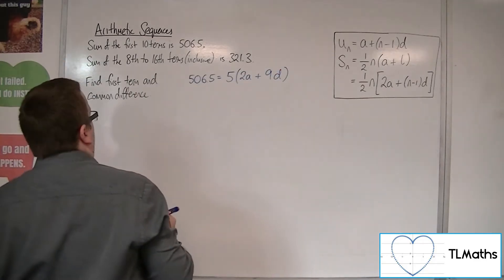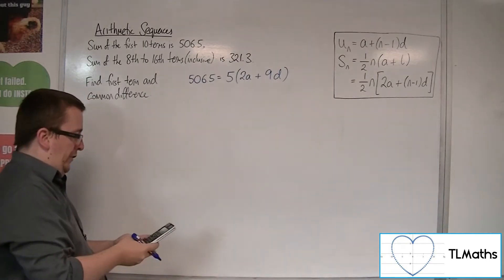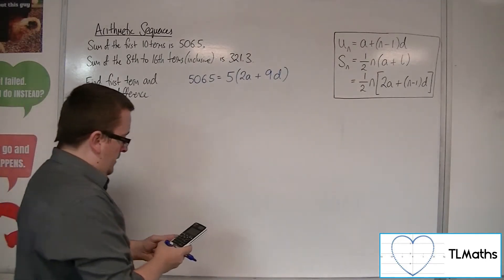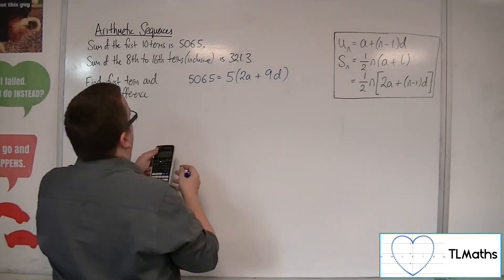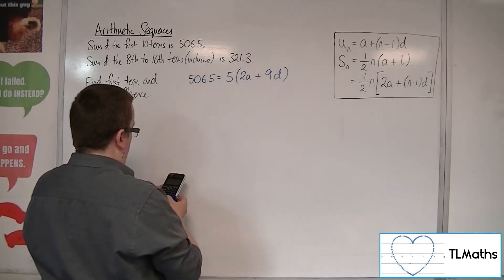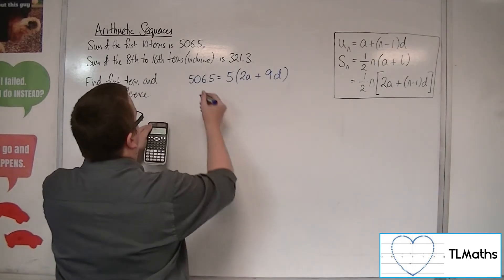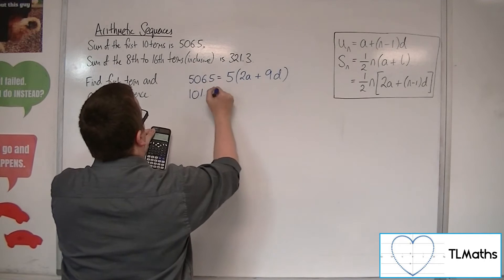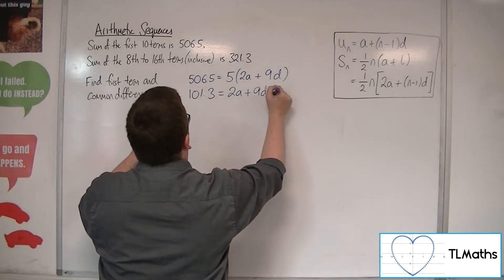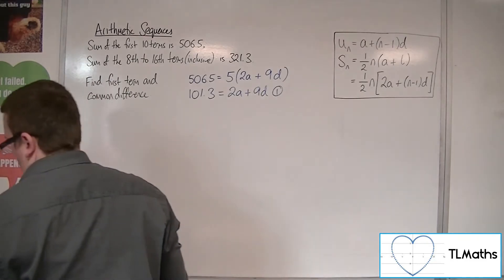Okay, now I can simplify that, dividing both sides by 5. So, 506.5 divided by 5, and I get 101.3 equals 2a plus 9d, and that can be equation number 1.